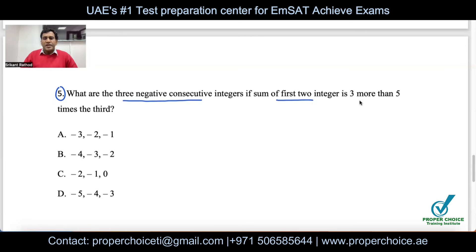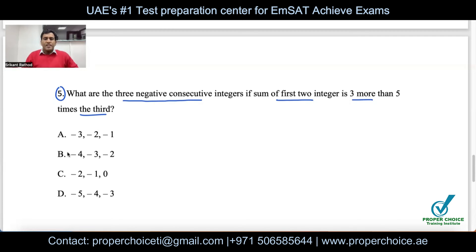First, understand what consecutive integers are. Consecutive numbers are numbers that come one after another — for example 1, 2, 3, 4 or 10, 11, 12, 13, 14. There is no end; every number increases by one.